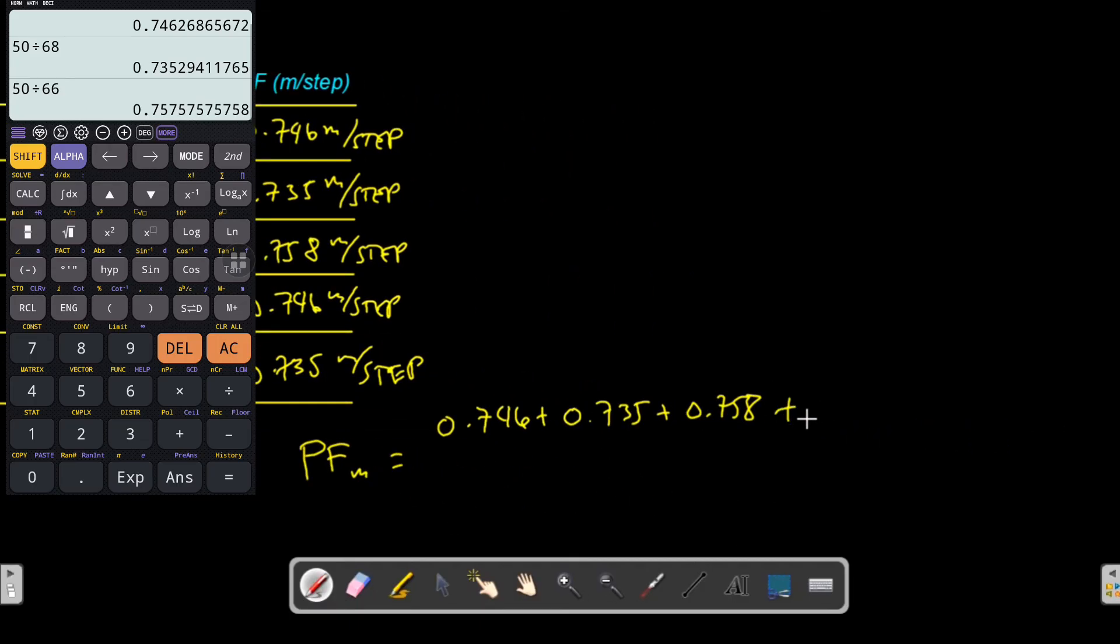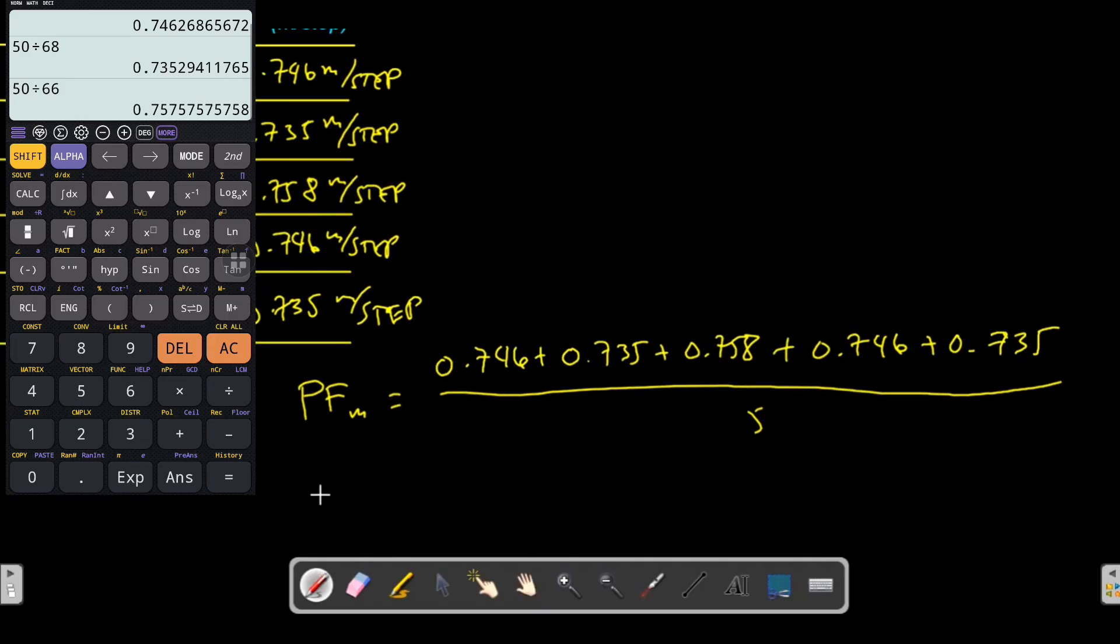Your mean pace factor is equivalent to 0.744 meters per step. This is now your own pace factor.